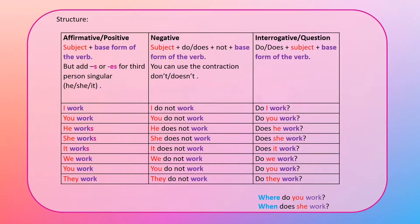Note: we add an S to the verb when using it with he, she, and it. For negative sentences, the pattern is: subject plus do or does plus not plus the base form of the verb. You can use the contractions don't or doesn't. For example: I do not work, you do not work, he does not work, she does not work, it does not work, we do not work, they do not work.